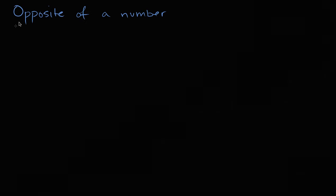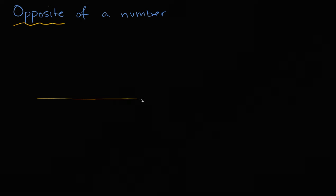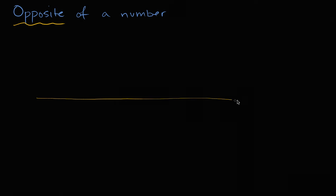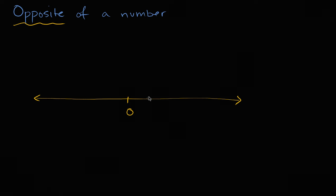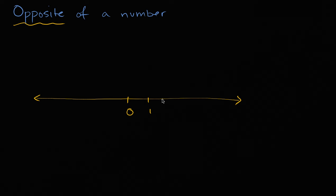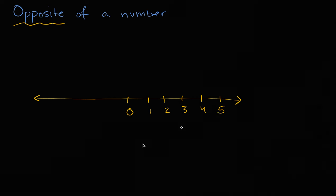What I want to do in this video is think about what it means to have an opposite of a number. So let me draw a number line here. Let's put some numbers on this number line. We can start at zero. If we go to the right, we have positive numbers: one, two, three, four, five.